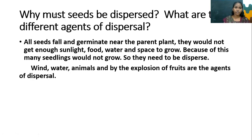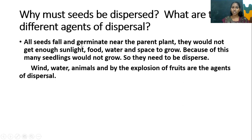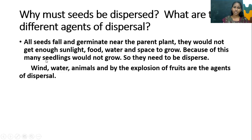Next question: Why must seeds be dispersed? If all seeds fall and germinate near the parent plant, they would not get enough sunlight, food, water, and space to grow. Because of this, many seedlings would not grow. So they need to be dispersed.